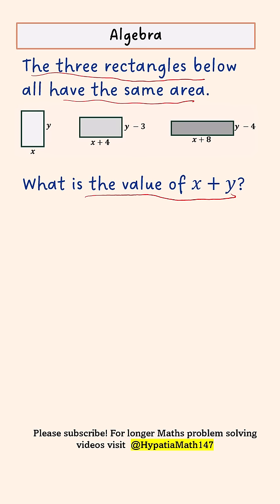You can see the sides of the first rectangle are x and y, then x plus 4, y minus 3, and x plus 8, and y minus 4.